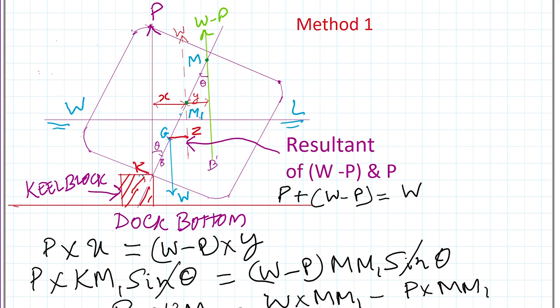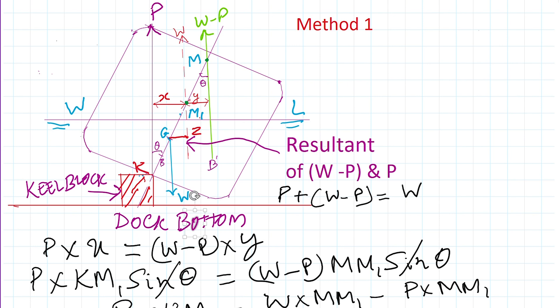The ship's total weight W acts downward from center of gravity G. The remainder buoyancy force is W−P, since out of total weight W, some weight is now supported by the keel blocks due to falling water, and the remaining weight of the ship is still supported by buoyancy at reduced underwater volume. So W−P acts upward. Both force P and buoyancy W−P act vertically upwards and parallel to each other.